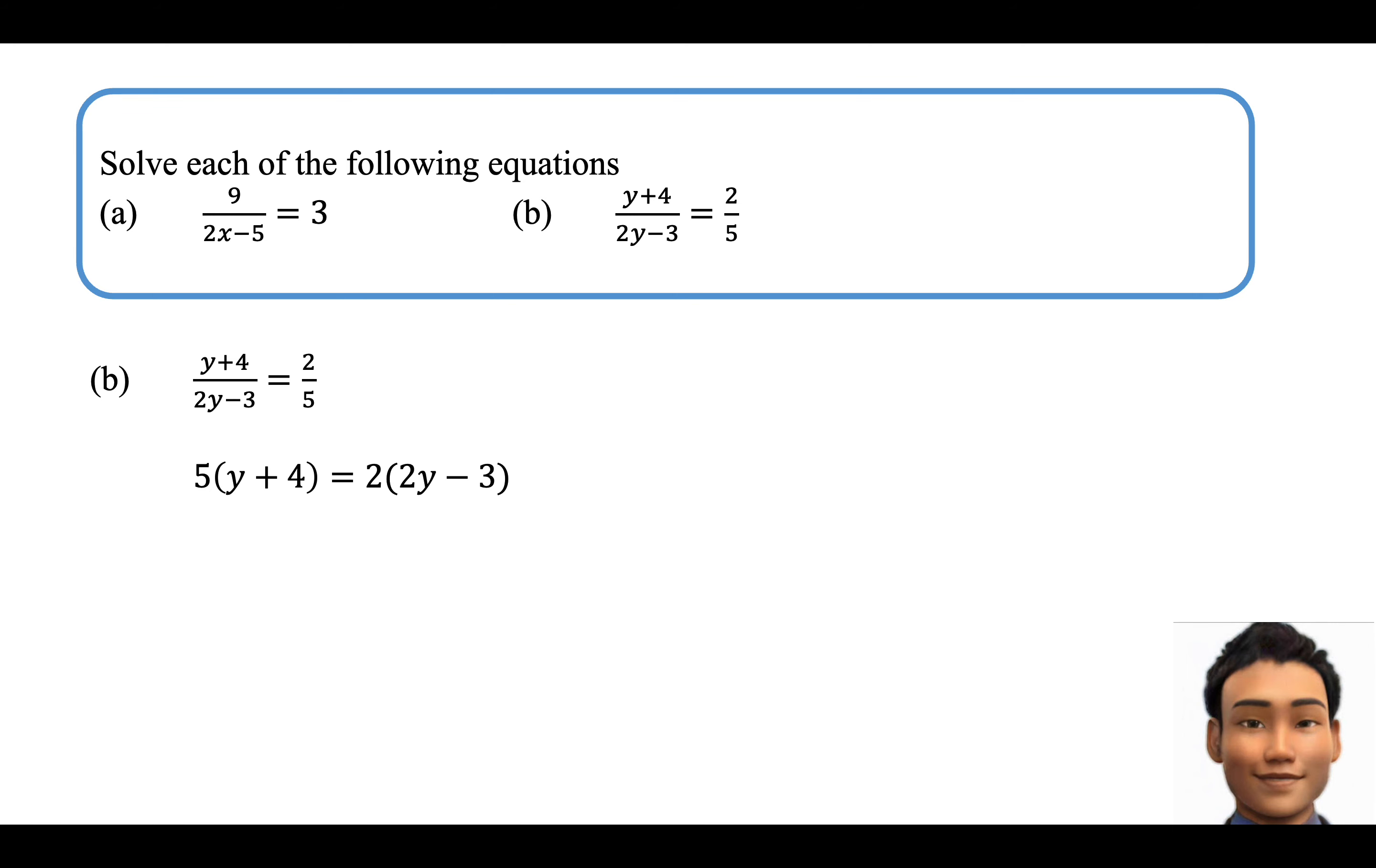5 times y plus 4 equals to 2 times 2y minus 3. Expand: 5y plus 20 equals to 4y minus 6.